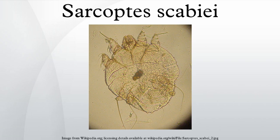Adult scabies mites are spherical, eyeless mites with four pairs of legs. They are recognizable by their oval, ventrally flattened and dorsally convex tortoise-like bodies and multiple cuticular spines. No demarcation into cephalothorax or abdomen occurs, and the mite surface has folds covered with short bristles. The front legs end in long, tubular processes known as suckers, and the hind legs end in long bristles. The male has suckers on all legs except the third pair, which distinguishes it from the female. Females are 0.3–0.45 mm long and 0.25–0.35 mm wide, and males are just over half that size.